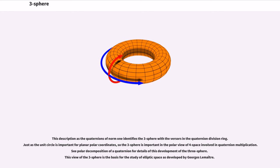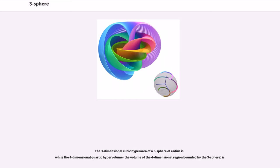Just as the unit circle is important for planar polar coordinates, so the three-sphere is important in the polar view of four-space involved in quaternion multiplication. See polar decomposition of a quaternion for details of this development of the three-sphere. This view of the three-sphere is the basis for the study of elliptic space as developed by Georges Lemaître.